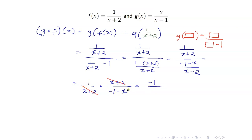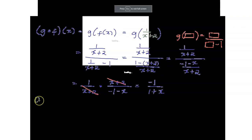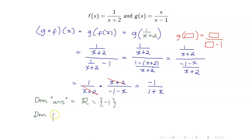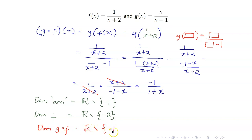Taking the negative to the numerator gives negative 1 over 1 plus x. The domain of negative 1 over 1 plus x is all reals except negative 1, since the denominator equals 0 when x is negative 1. The inner function is f of x, and the domain of f is all reals except negative 2. Hence, the domain of g circle f is the intersection of these two sets — all reals with both negative 1 and negative 2 removed.